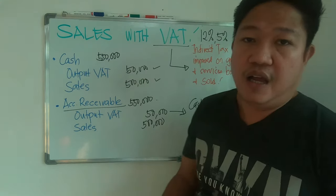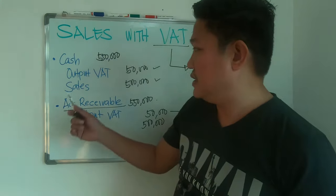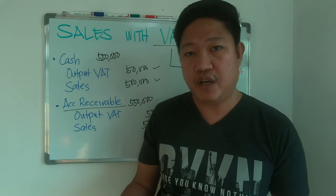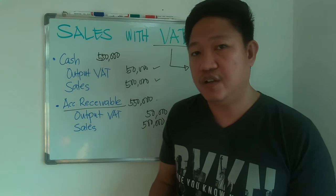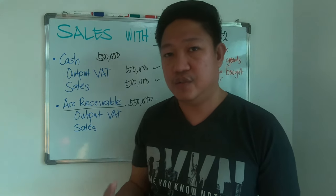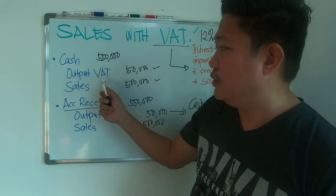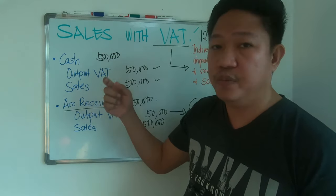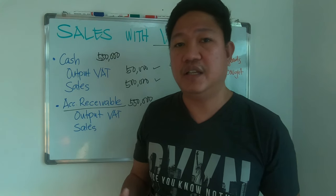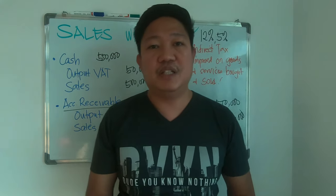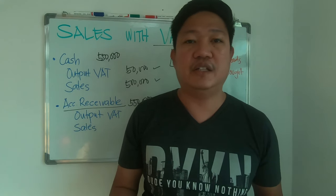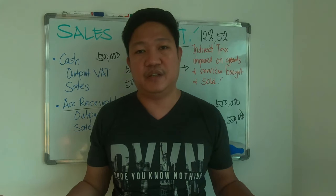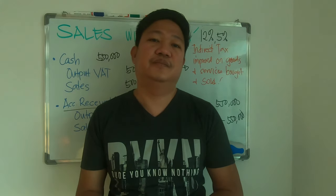As mentioned, Output VAT is a current liability. As a business owner or accountant, you have to remit this to the government, but first you offset it against your Input VAT. The government allows you to remit only the net amount. We will discuss how to calculate the VAT amount due in the next videos. Thank you for watching!